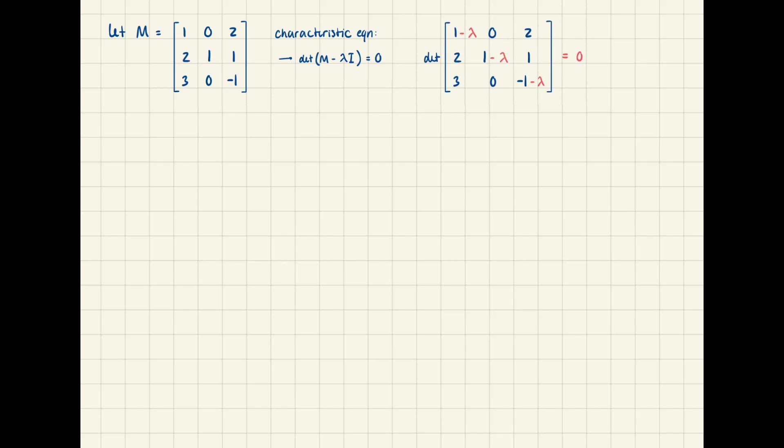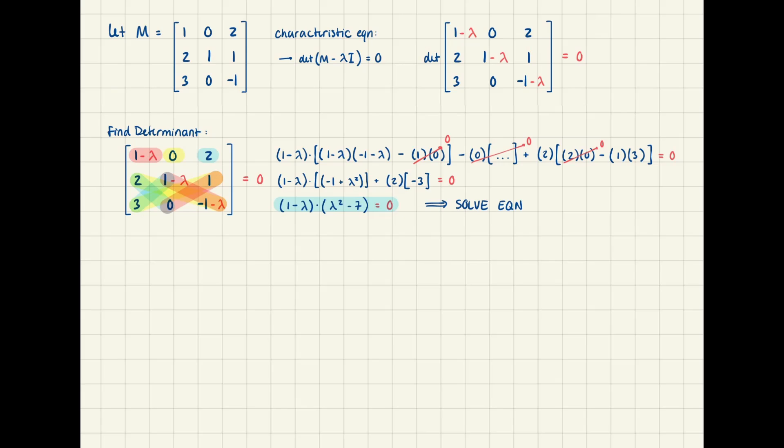To represent this equation in matrix form, you would just subtract lambda along the diagonal and then set the whole thing equal to zero. Since this is linear algebra, I'm assuming you already know how to find the determinant of a matrix, so I'll just paste that work right here. You can pause it if you want to look how I did it.